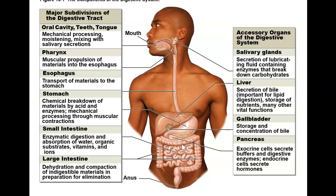The small intestine is where most of your chemical digestion takes place, due to enzymes being secreted into this organ. Absorption of water, organic substrates, vitamins, and ions also occurs here. Then in the large intestine, any undigested material is dehydrated and compacted to form feces, which leaves the body through the anus and rectum.